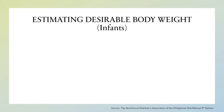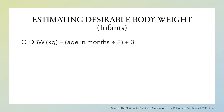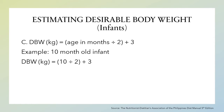Now let's use another formula. This one does not take into consideration whether the infant is below 6 months or below 12 months old. The formula is: age in months divided by 2, plus 3. For example, a 10-month-old infant: the desirable body weight equals 10 divided by 2, plus 3 — that is 5 plus 3, which equals 8 kilograms.